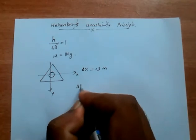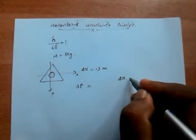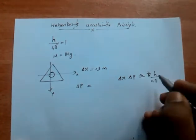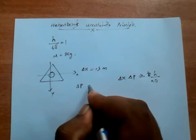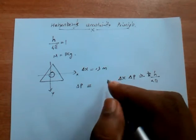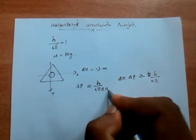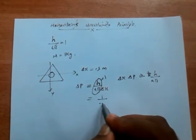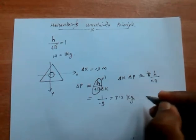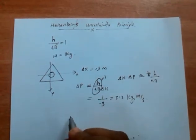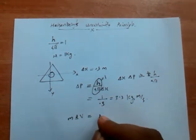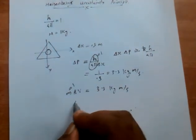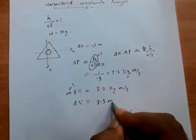We can find out the momentum. The uncertainty relation is delta x times delta p greater than or equal to h divided by 4π. We are considering minimum uncertainty, so we use the equal sign. Therefore delta p equals h divided by 4π times delta x, which equals h/4π. Since we have taken h/4π equal to 1, we get 1 divided by 0.3 equal to 3.33. The unit of momentum is kilogram meter per second. Since momentum equals mass times velocity and mass m equals 1 kilogram, we get delta v equal to 3.3 meter per second.